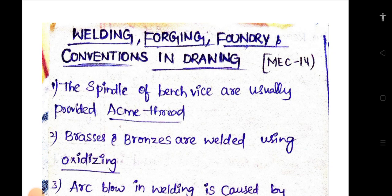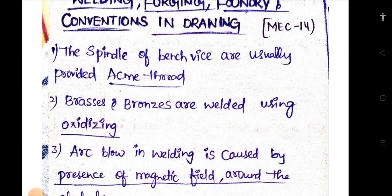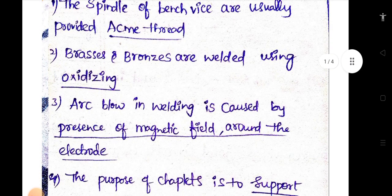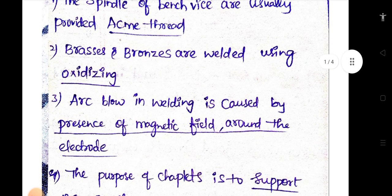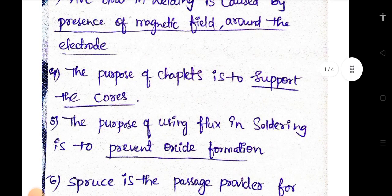First questions: The spindle of lathe vice are usually provided acme thread. Brasses and bronzes are welded using oxidizing. Arc blow in welding is caused by presence of magnetic field around the electrode. The purpose of chaplets is to support the cores. The purpose of using flux in soldering is to prevent oxide formation.